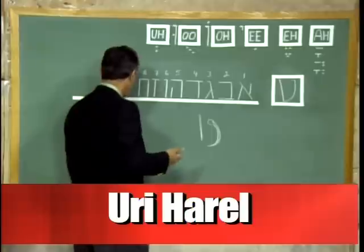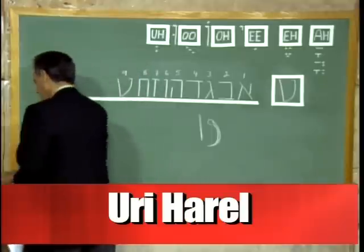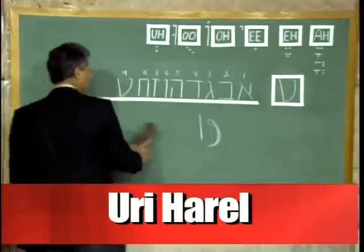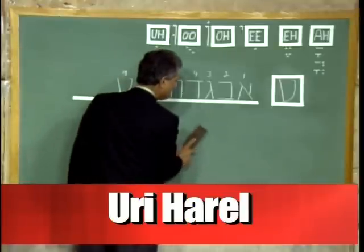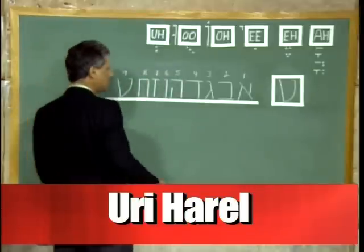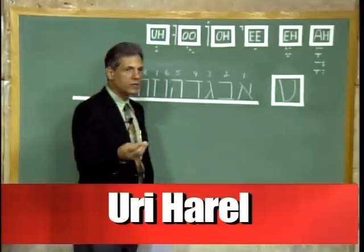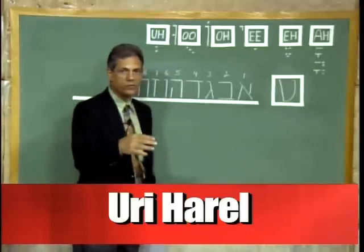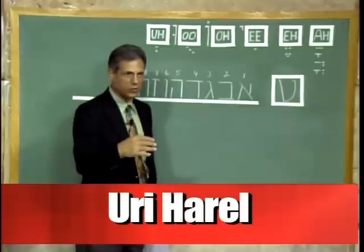In Genesis, in the beginning, God created things and then He saw that it was Tov — that it was good.